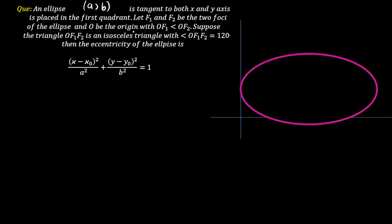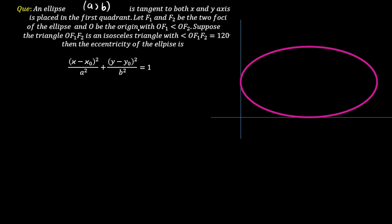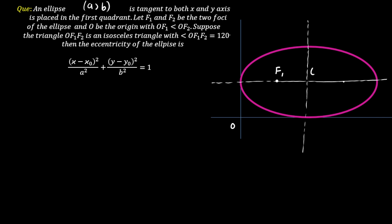The ellipse is tangent to both the x-axis and y-axis and is placed in the first quadrant. Let f1 and f2 be the two foci of the ellipse and O be the origin. The major axis is parallel to the x-axis and the minor axis is parallel to the y-axis, meeting at a point C. It is given that the foci f1 and f2 are the foci of the ellipse, and OF1 is less than OF2, meaning f1 is nearer to the origin.